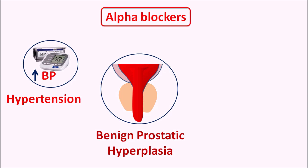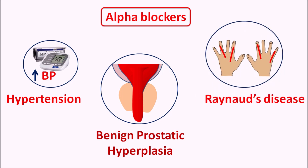In conditions like Raynaud's disease, where there is increased vasoconstriction at the periphery, particularly at the hands, feet, and toes, alpha blockers can be used to produce vasodilation.